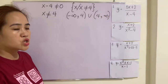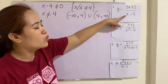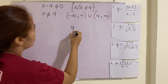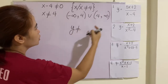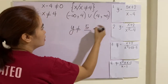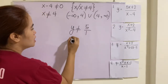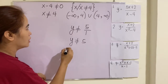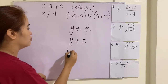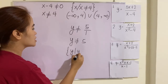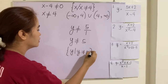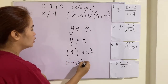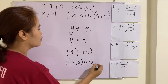To find the range, if the degree of the numerator is equal to the degree of the denominator, your range must be y is not equal to the ratio of leading coefficients: 5 over 1. So y is not equal to 5. In set notation, this will be y such that y is not equal to 5. In interval notation, this will be negative infinity, 5, union 5, positive infinity.